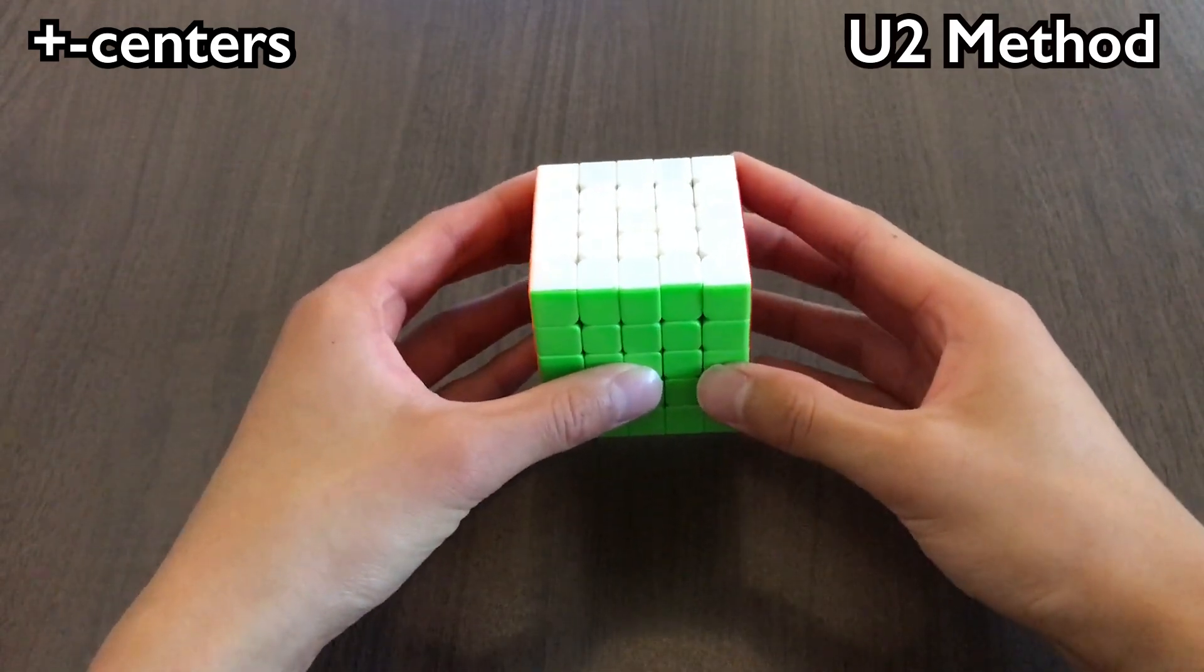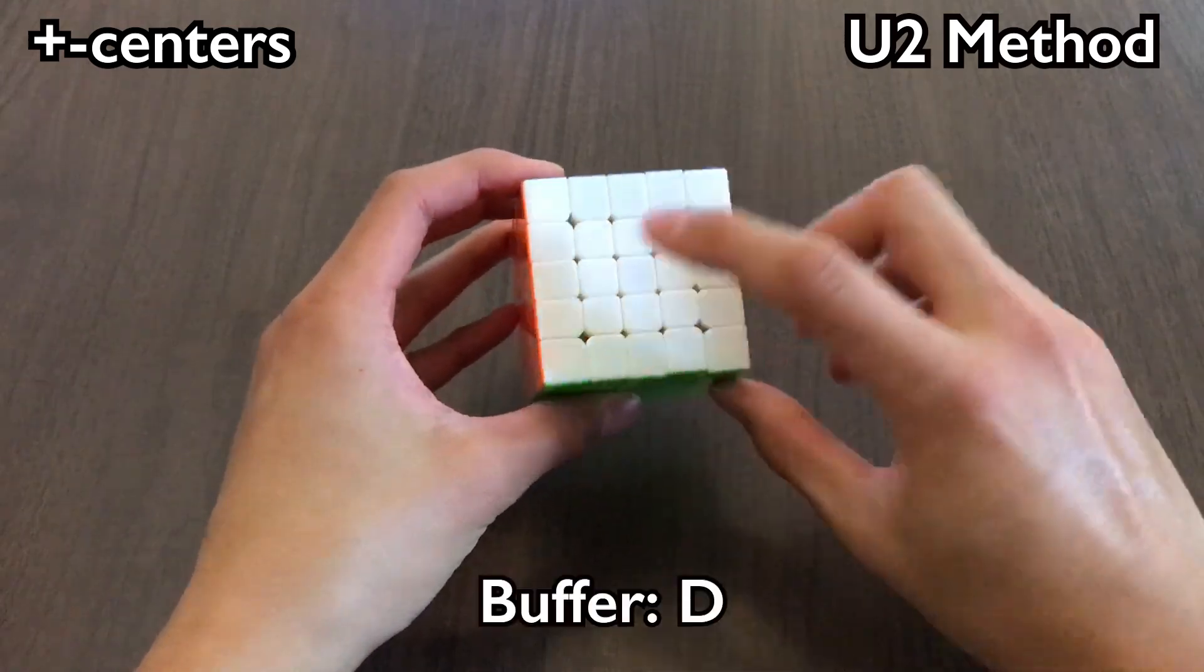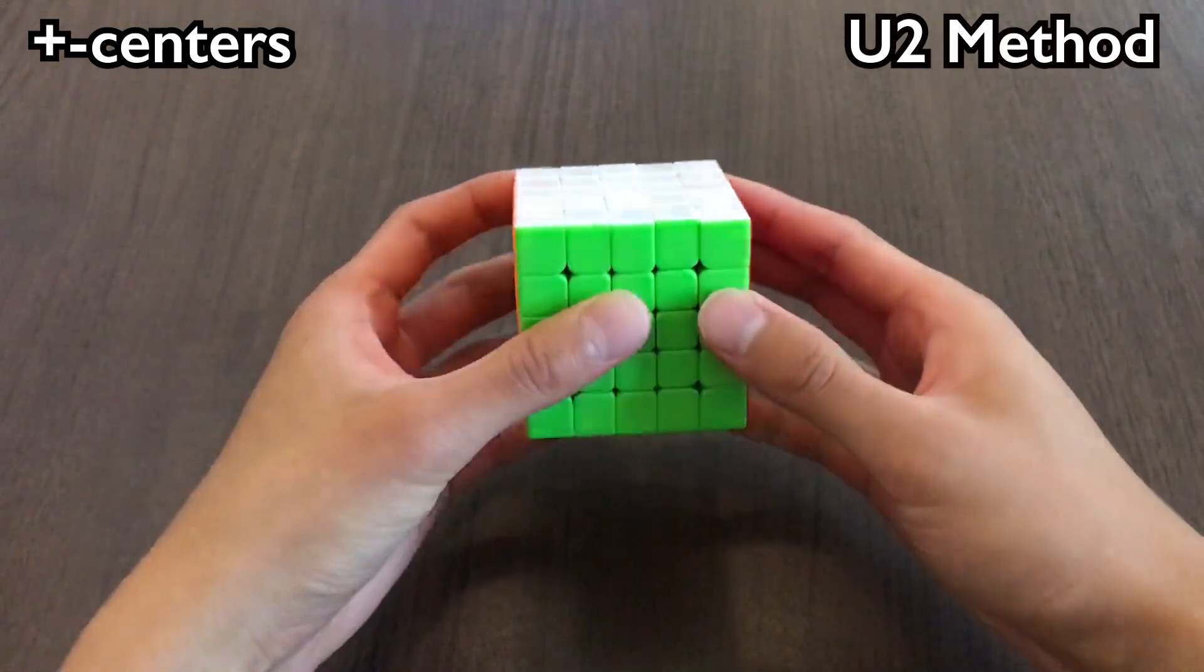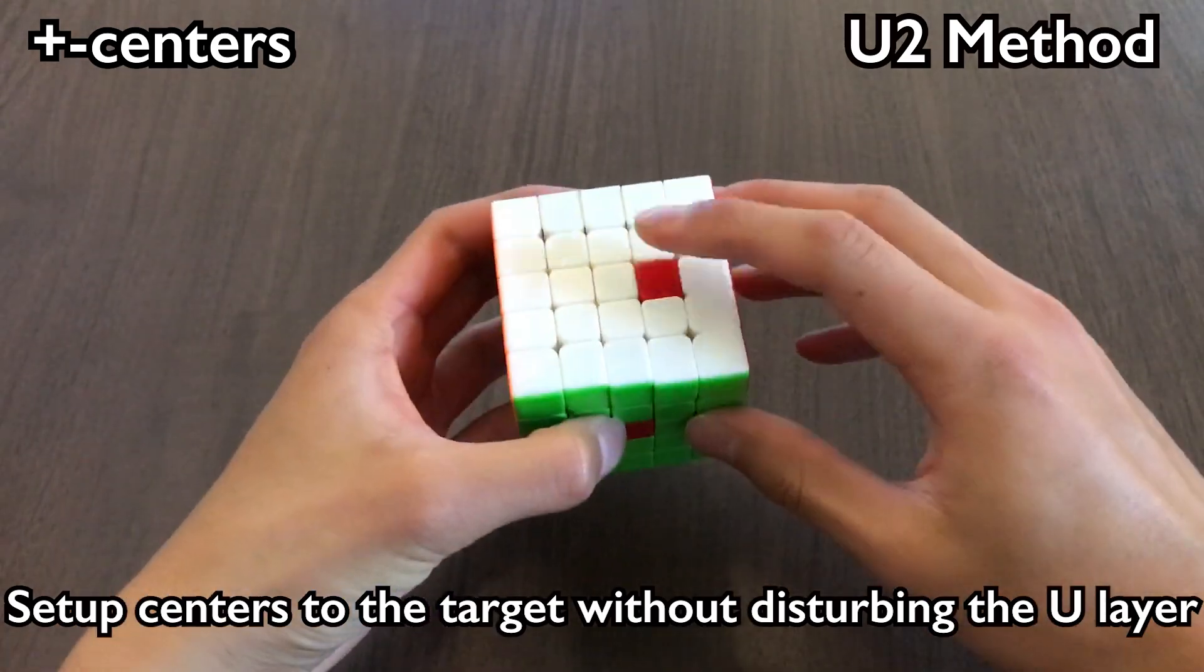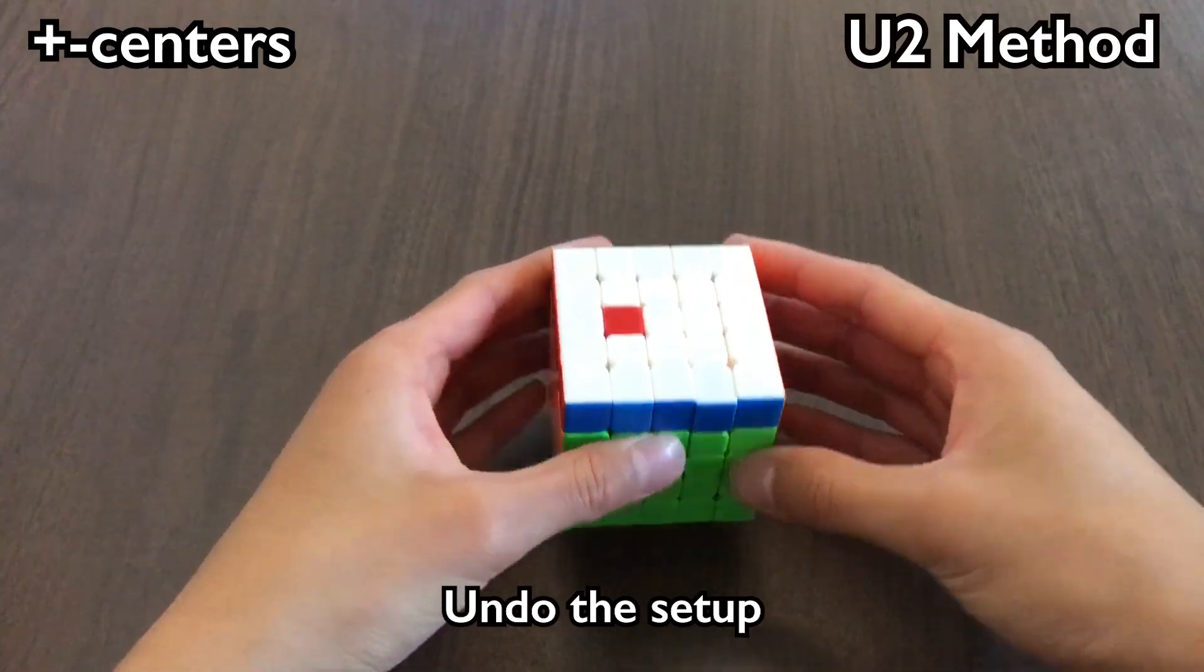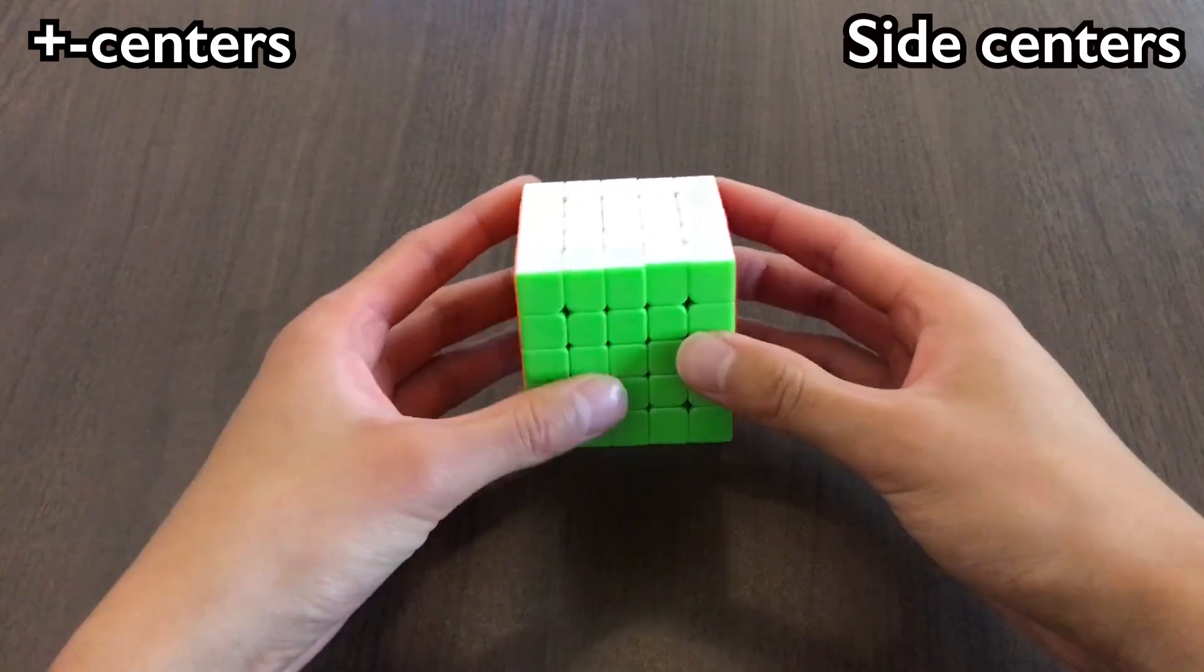We can solve plus centers with the U2 method, and the concept is the exact same as U2 for X centers. We have our buffer, D, and our target sticker, B. The idea is to set up centers to our target sticker, do a U2, then undo the setup. Just like X centers, we have top centers, side centers, and bottom centers.